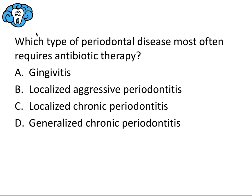Question number two: which type of periodontal disease most often requires antibiotic therapy? This is a high-yield fact from our adjunctive therapy video. The aggressive form of periodontitis most often needs to be treated with antibiotics. So the only viable answer is B — localized aggressive periodontitis.